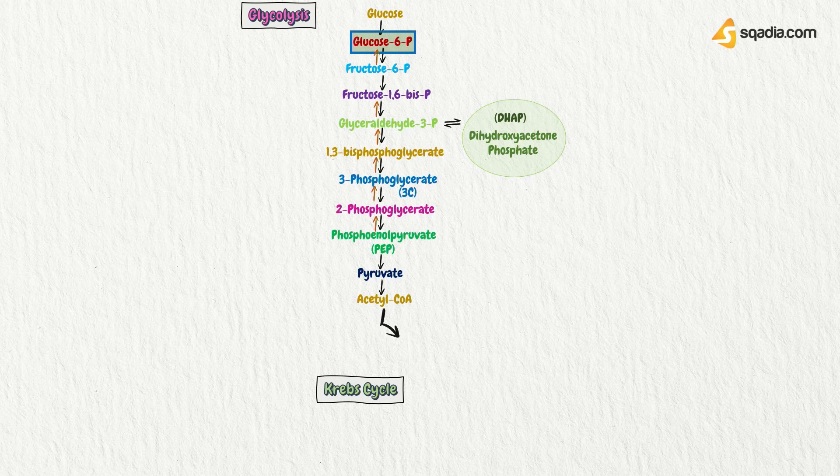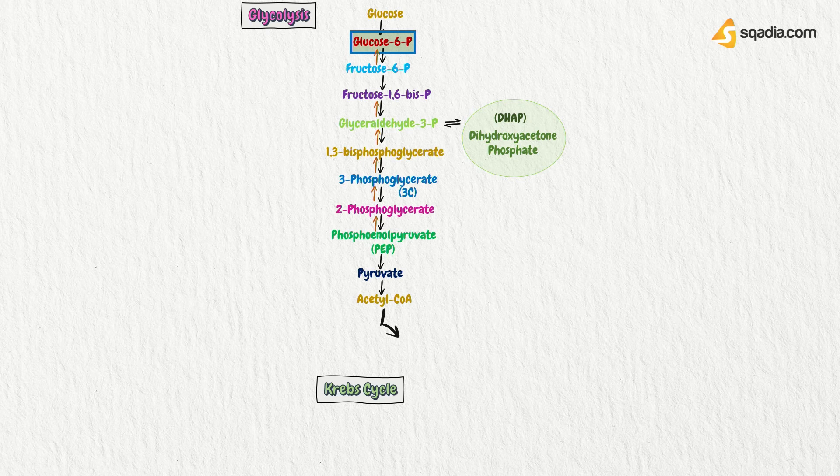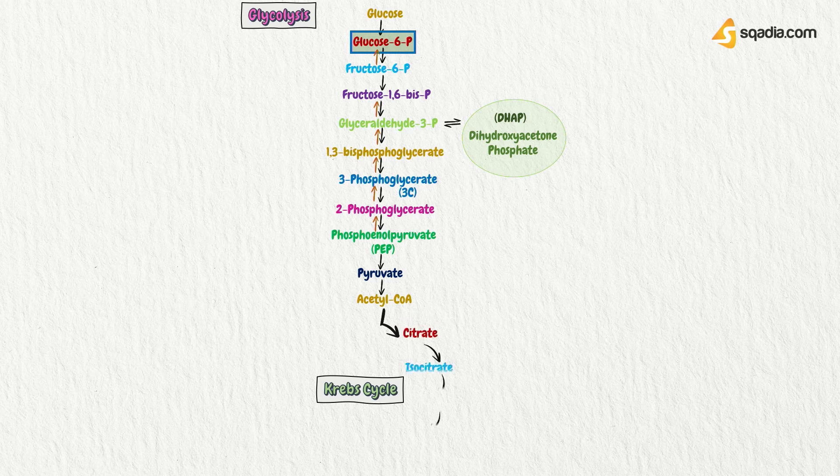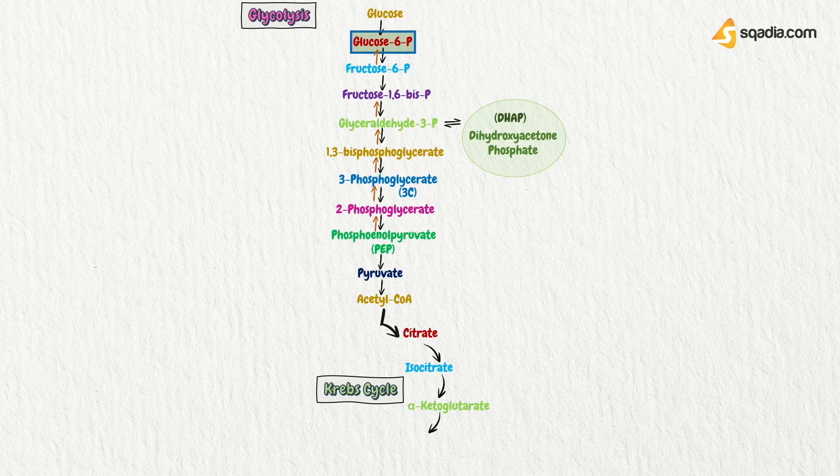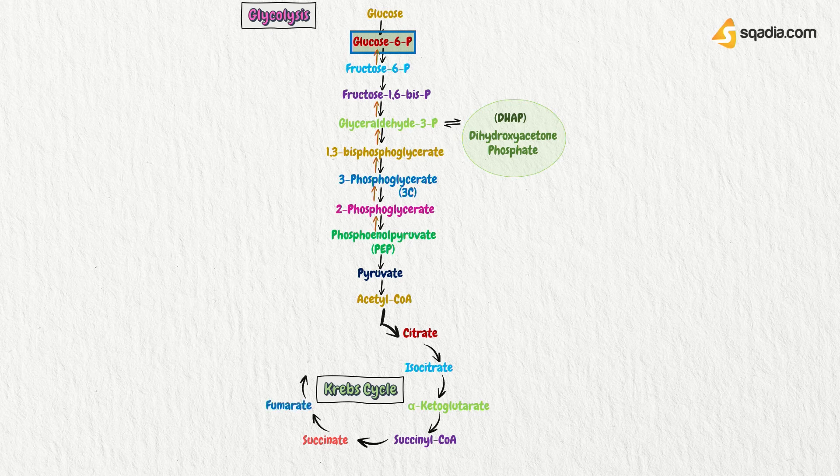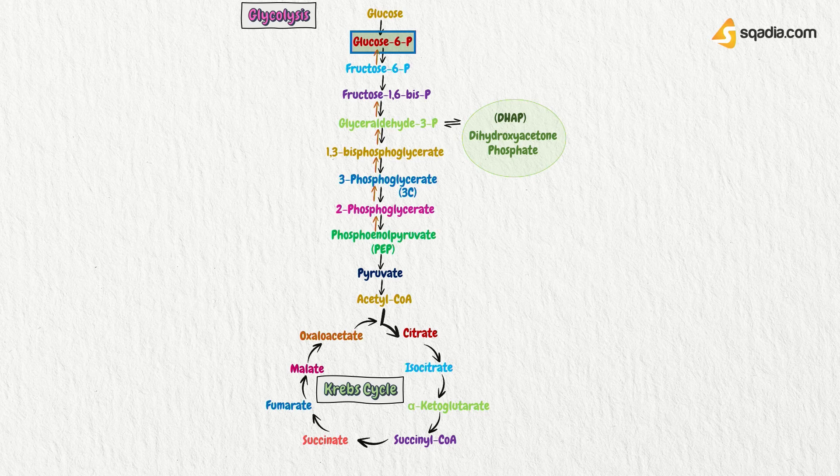Now, Krebs cycle involves several steps from which ATP molecule is generated. Acetyl coenzyme converts itself into citrate, then isocitrate, then alpha-ketoglutarate, then succinyl coenzyme A, then succinate, fumarate, malate, and lastly oxaloacetate. This process also yields ATP, basically 12 in number.